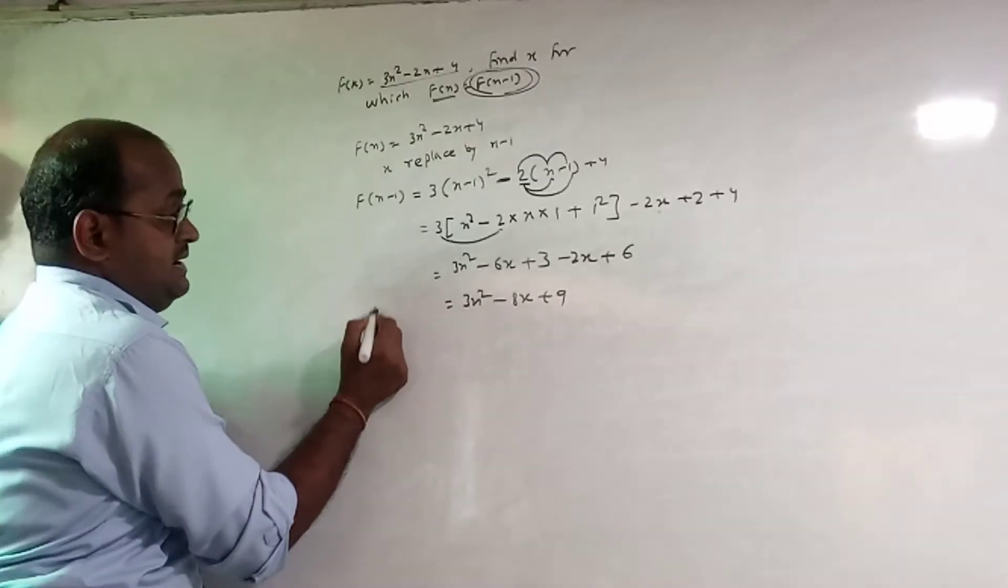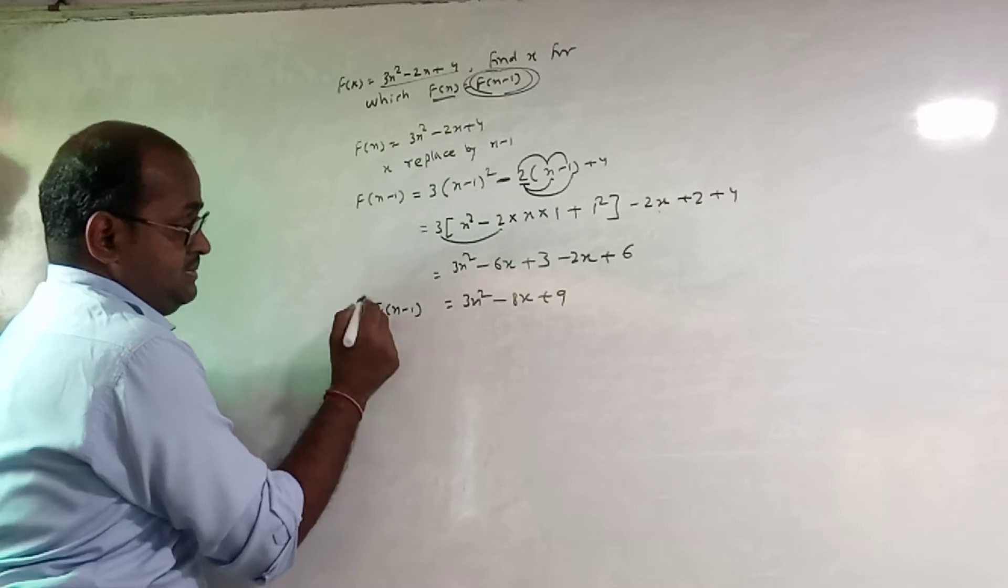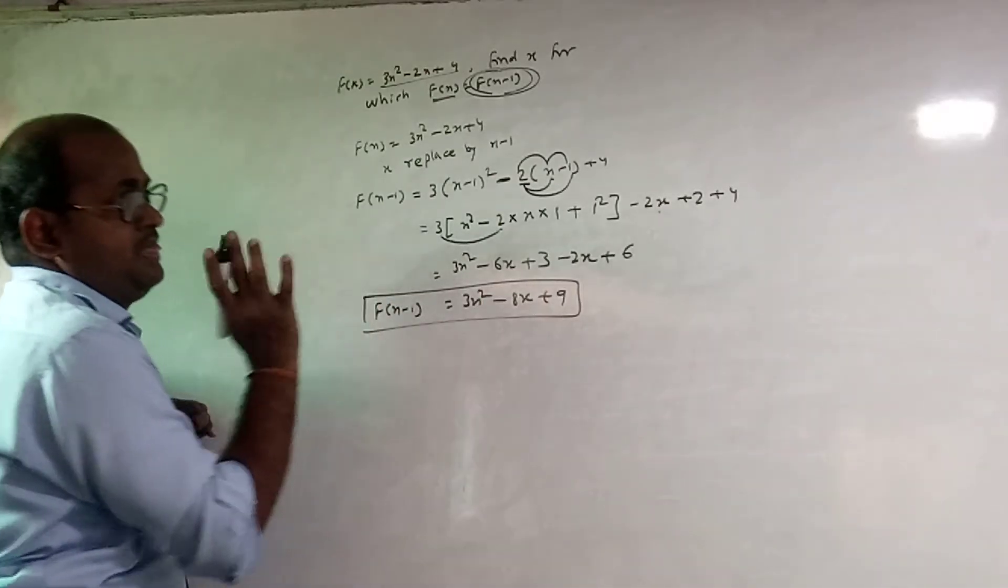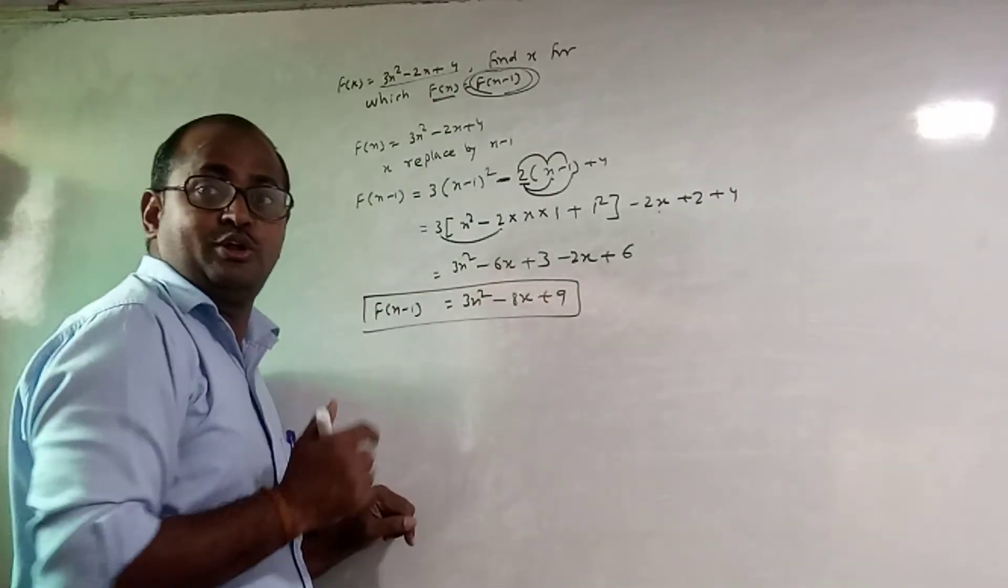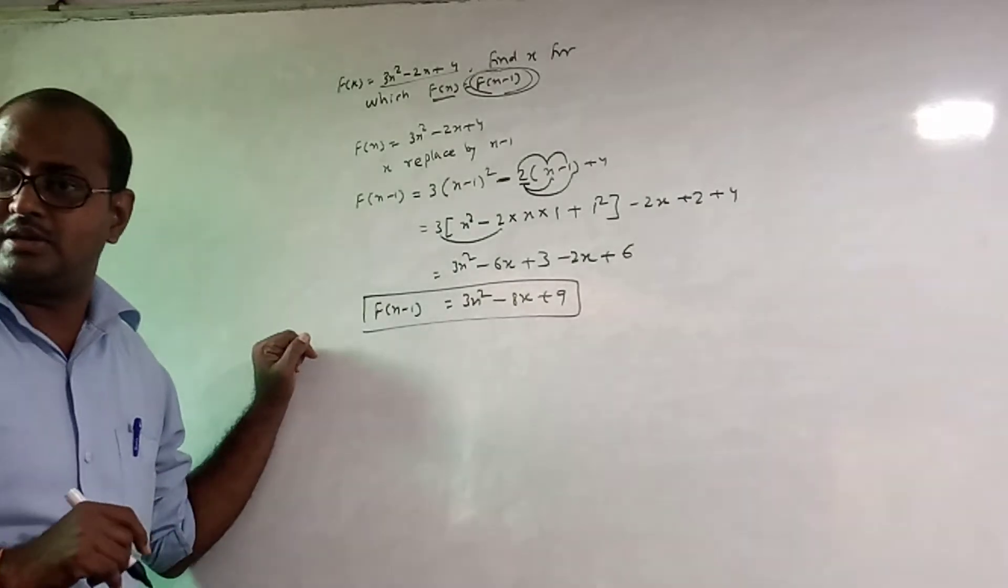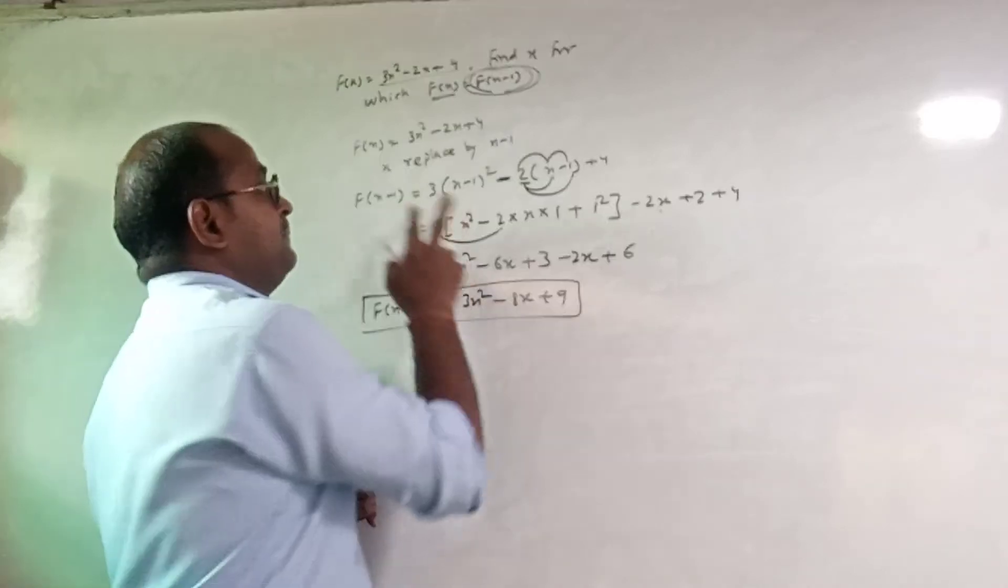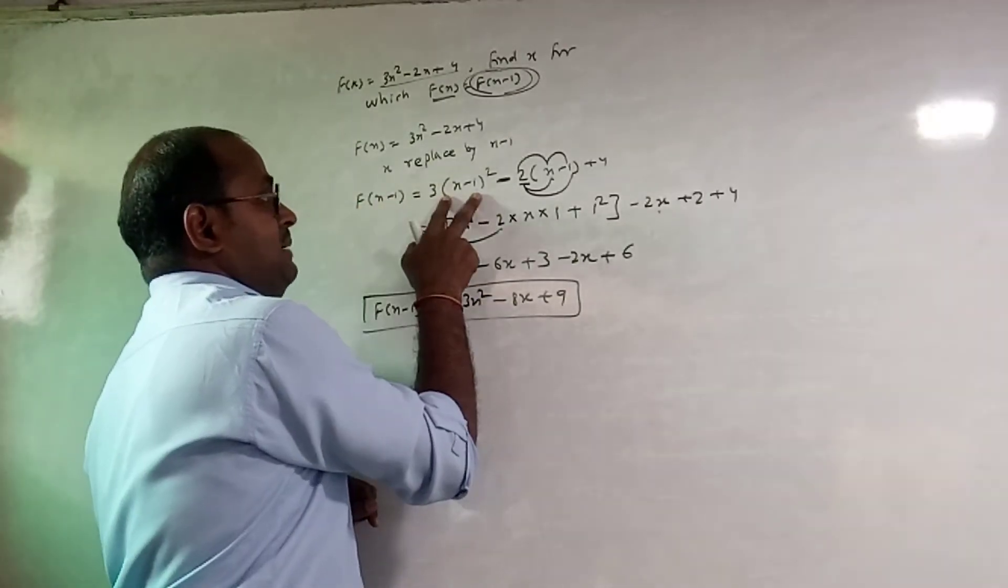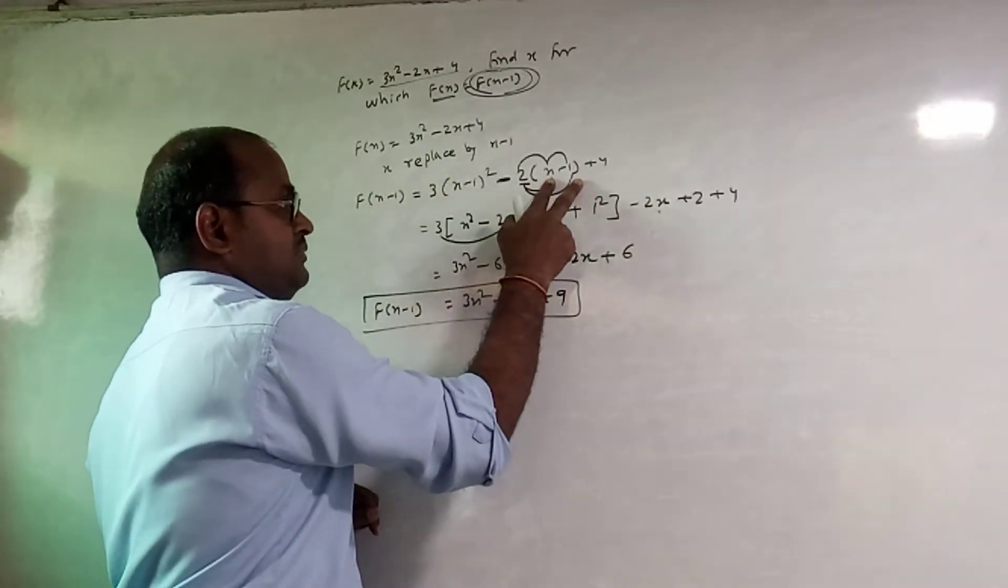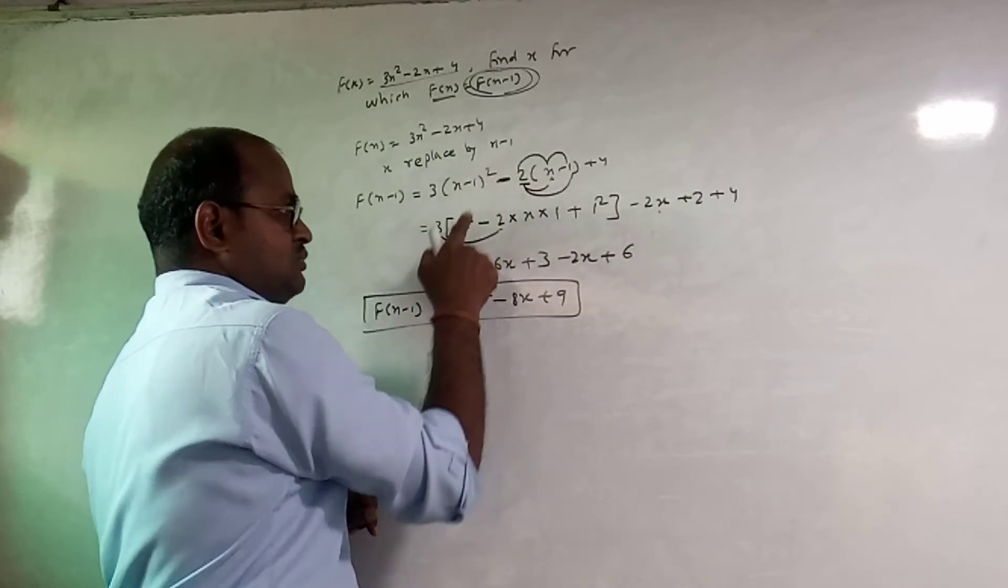x is f of x minus 1. So x minus 1, x minus 1 square.